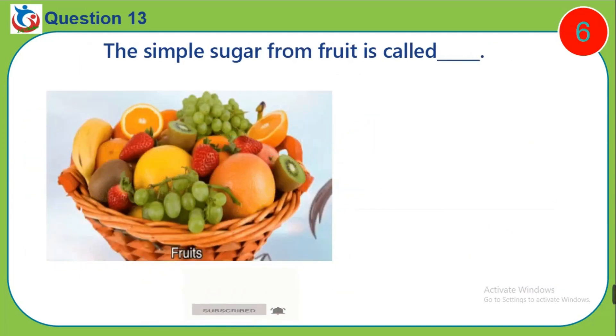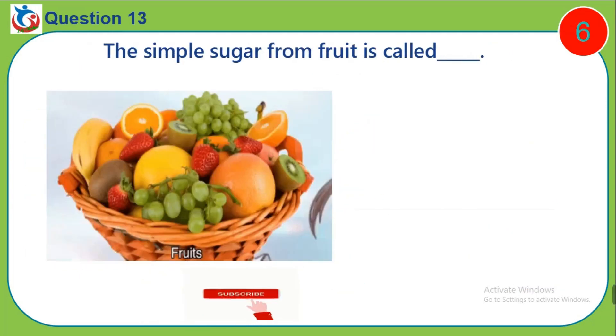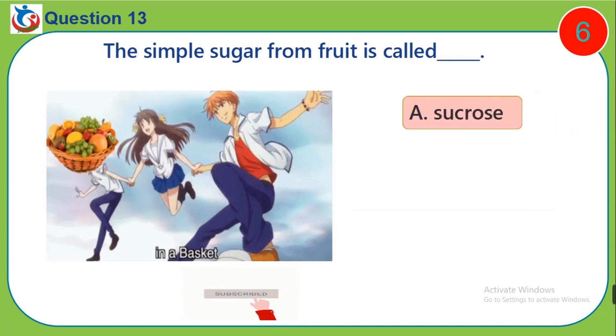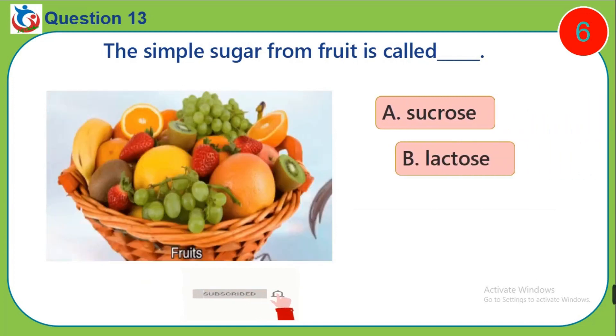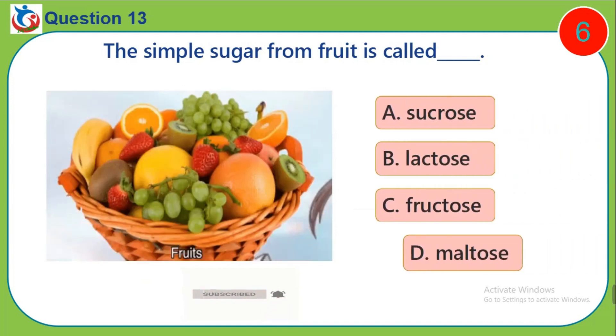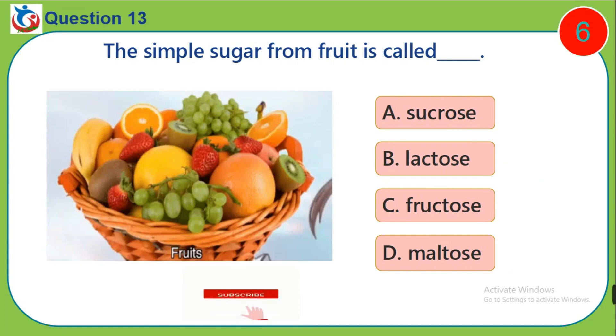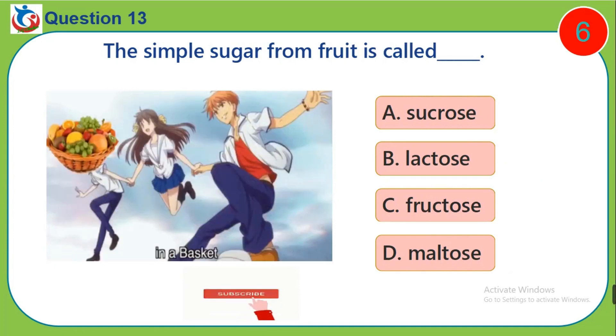Question 13. The simple sugar from fruit is called: A. Sucrose. B. Lactose. C. Fructose. D. Maltose.